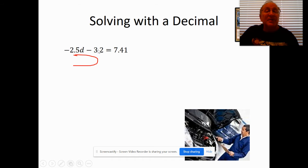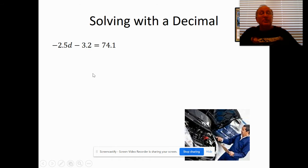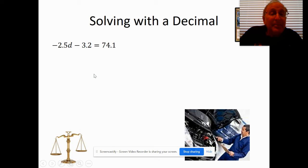Well, how can I undo a subtraction? Right, it's opposite: with an addition. So I'm going to add 3.2 here. You notice I have these crossed out. If I add 3.2 to this side, I've also got to add 3.2 to that side.